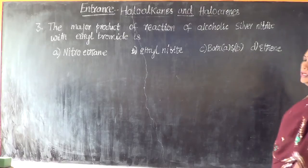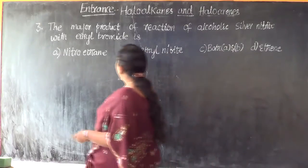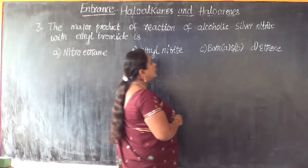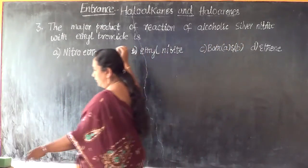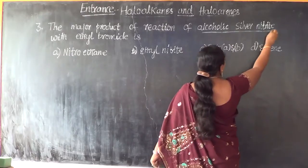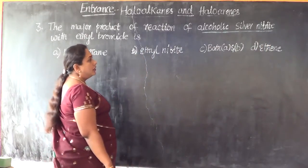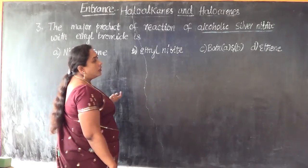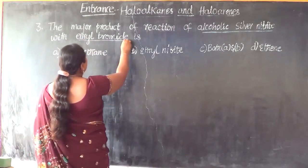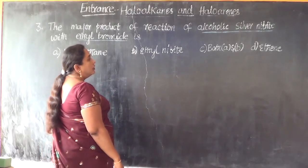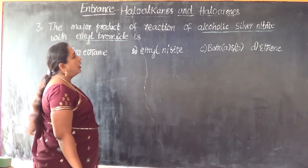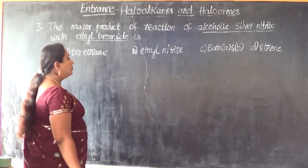Let us look into question number 3. The major product of the reaction of alcoholic silver nitrite with ethyl bromide. The point of focus is ethanolic silver nitrite — also called alcoholic silver nitrite — is one reactant, and ethyl bromide is the other. What is the product when ethyl bromide is treated with alcoholic silver nitrite? Let us look into all four options.